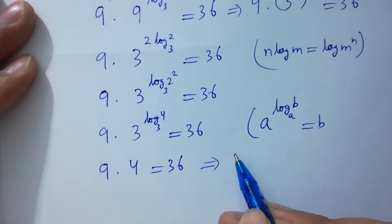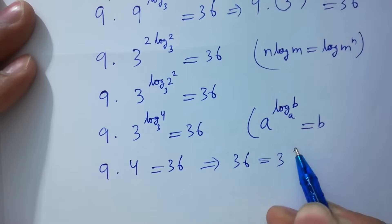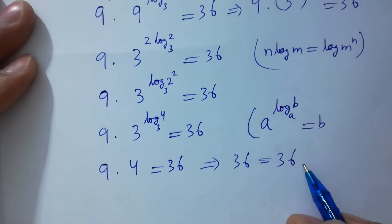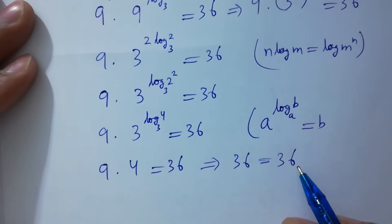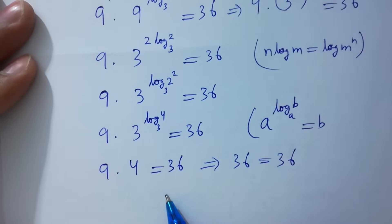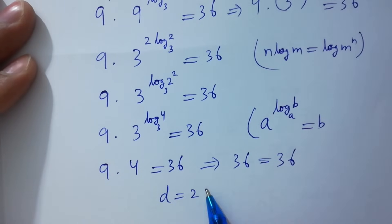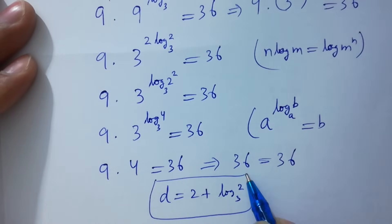9 times 3 to the power log 4 to the base 3 equals 4, so 9 times 4 equals 36. Left hand side equals right hand side. The value of d equals 2 plus log 2 to the base 3 satisfies the equation.